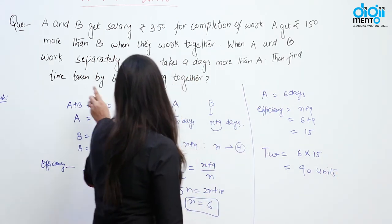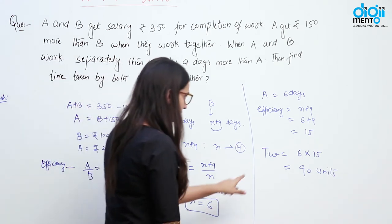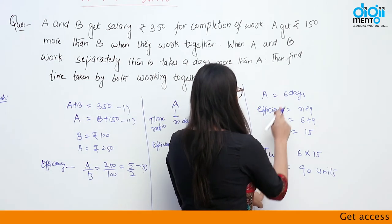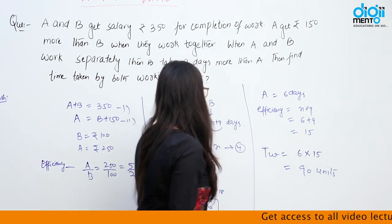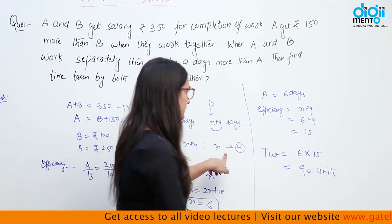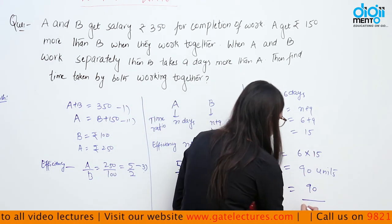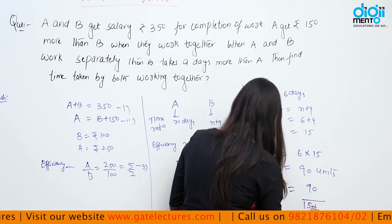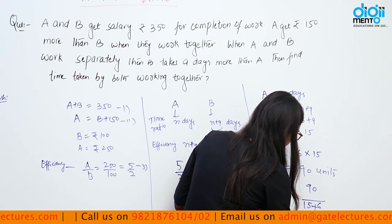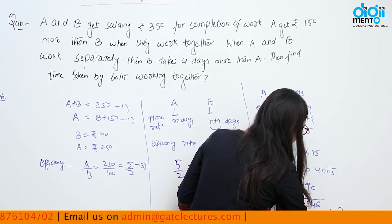Now we find in how many days both A and B together complete the work. Combined efficiency of A and B = 15 + 6 = 21 units. Total work = 90 units. So time taken = 90/21 = 4 and 2/7 days.